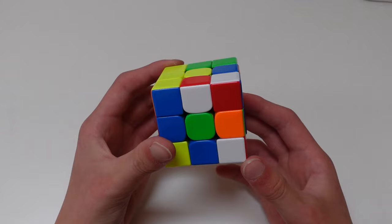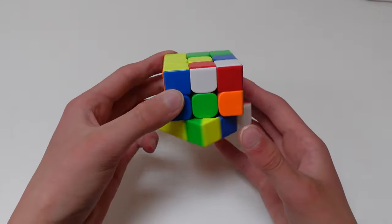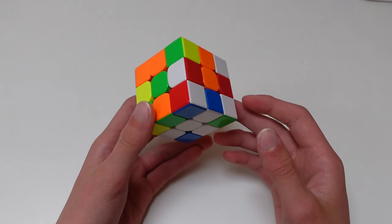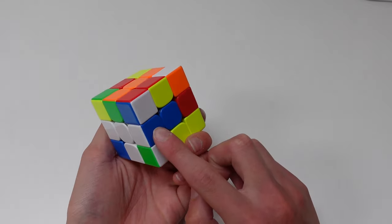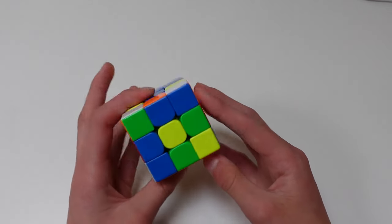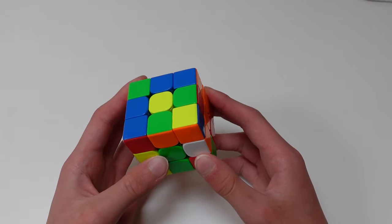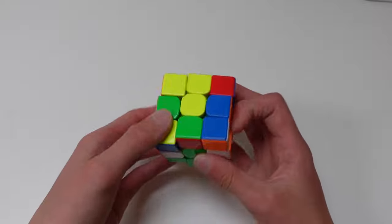Number 5, ZZ. ZZ is a really interesting method. At the very start of the solve, you do a few moves to orient all 12 edges on the cube. This small step takes a lot of practice and understanding to get good at. While doing this, you solve the front and back cross pieces, making what's called the EO line. This allows you to solve the rest of the cube with just L, R and U moves, meaning you don't have to rotate at all during the solve, and you can turn really fast.